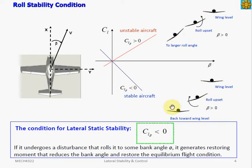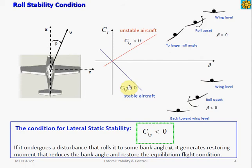Looking at the plot of the statically stable aircraft: suppose the aircraft is flying at wings level flight and then experiences roll upset, causing a positive sideslip angle — the aircraft experiences a positive roll and rolls right wing down. The aircraft would then generate a restoring moment to reduce this bank angle, developing a negative rolling moment to roll its left wing down and right wing up. So CL_beta less than zero indicates a statically stable aircraft in rolling motion.